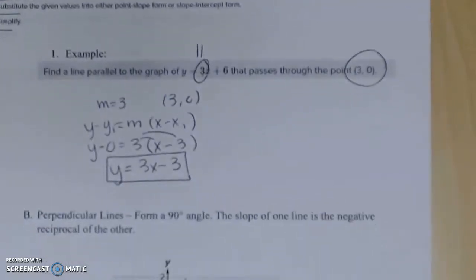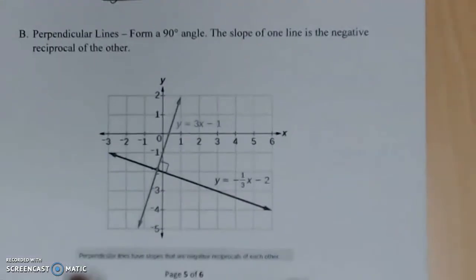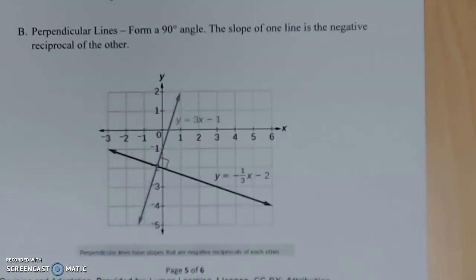Now let's move on to perpendicular lines. Perpendicular lines form a 90-degree angle, and the slope of one line is the negative reciprocal of the other. That sounds really confusing, so let's look at the picture first and then we'll look at the numeric values next.